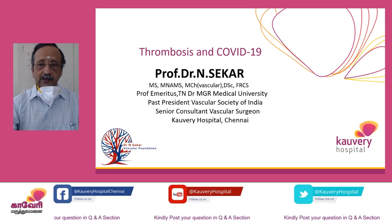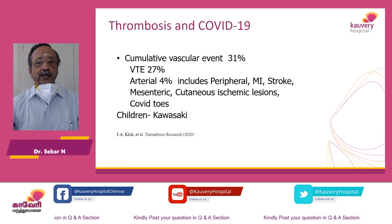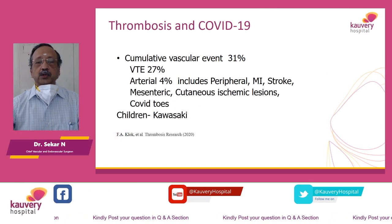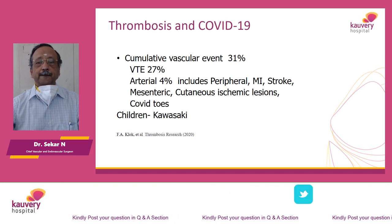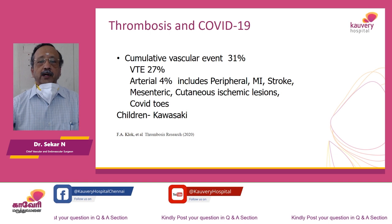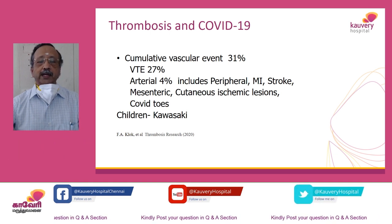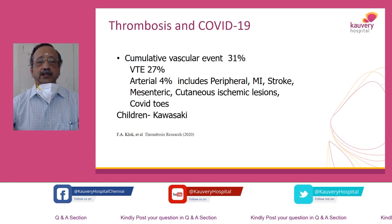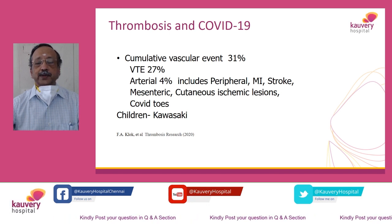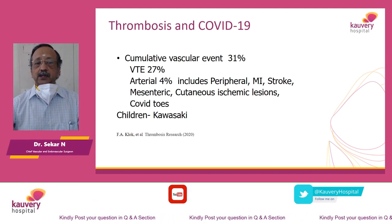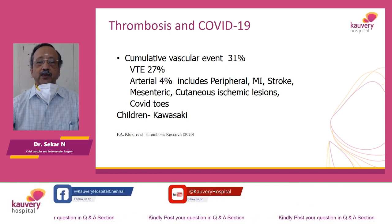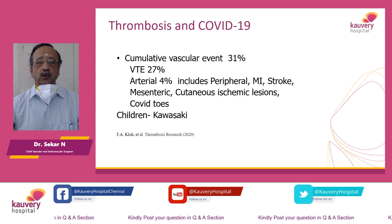Of late, we have been seeing a very, very high incidence of thrombotic events, both venous as well as arterial. Just to give you a brief introduction about what is happening in the international literature, what has been reported is a cumulative vascular event of nearly 31 percent, out of which nearly 27 percent involve the veins and 4 percent involve the arteries.